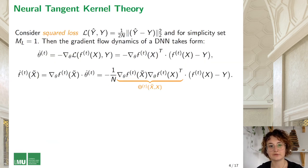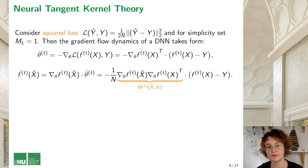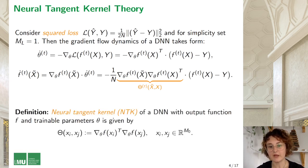Let me now introduce neural tangent kernel theory. Consider, for simplicity, that we use squared loss and set the output dimension to 1. Writing the gradient flow dynamics again, we can expand the gradient of the loss and plugging it into the equation for the output function dynamics, we get the last expression. You can see that we have a product of two Jacobians of the output function with respect to the trainable parameters, and we denote this product as a matrix theta. This matrix theta is, in fact, the neural tangent kernel. Each element of this matrix is given by an inner product of the output function gradients taken at different input vectors xi and xj.